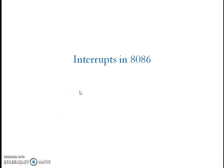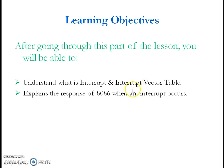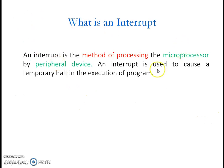This is Sunita and I am going to explain about interrupts in the 8086 microprocessor. After going through this lesson, you will understand what is an interrupt and what is meant by the interrupt vector table, and you will be able to explain the response of 8086 when an interrupt occurs. An interrupt is a method of processing the microprocessor by a peripheral device.